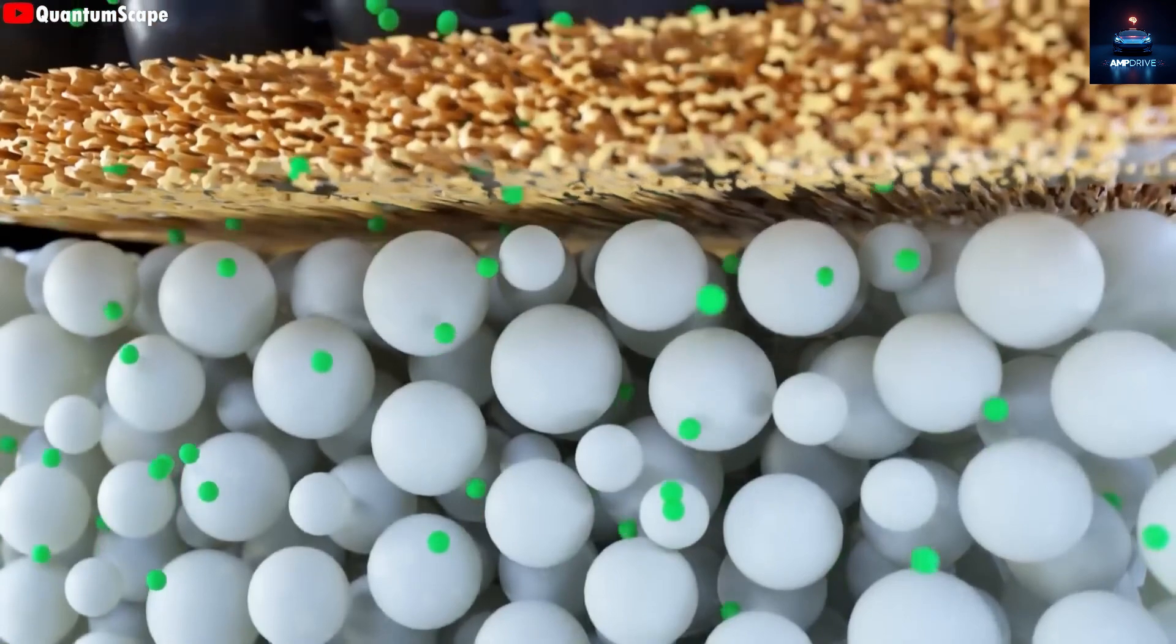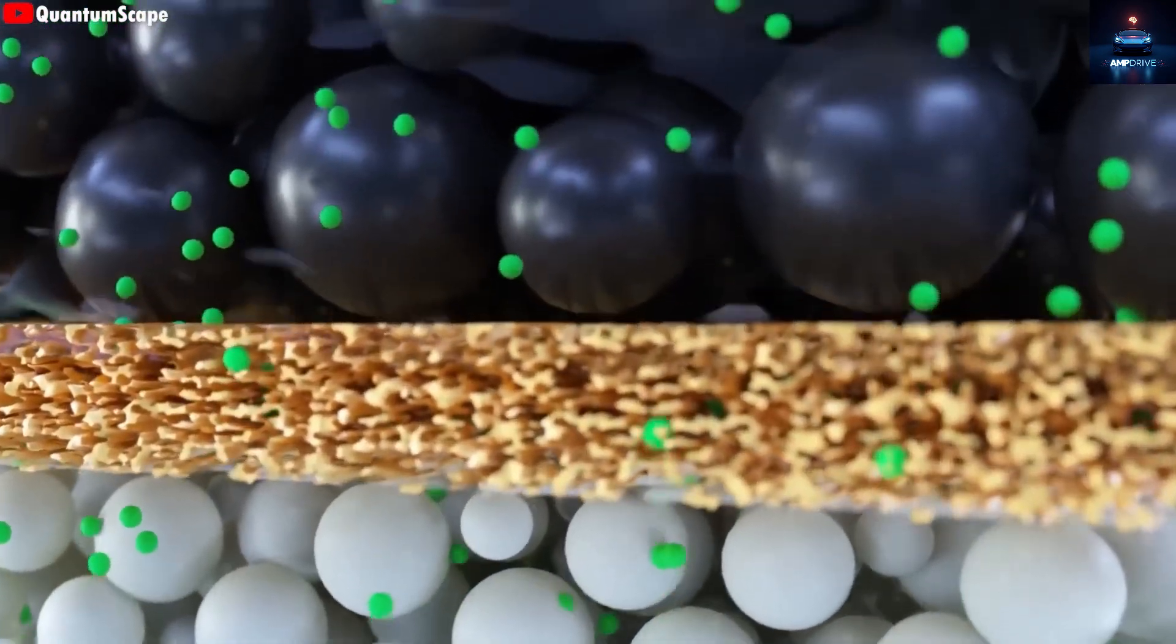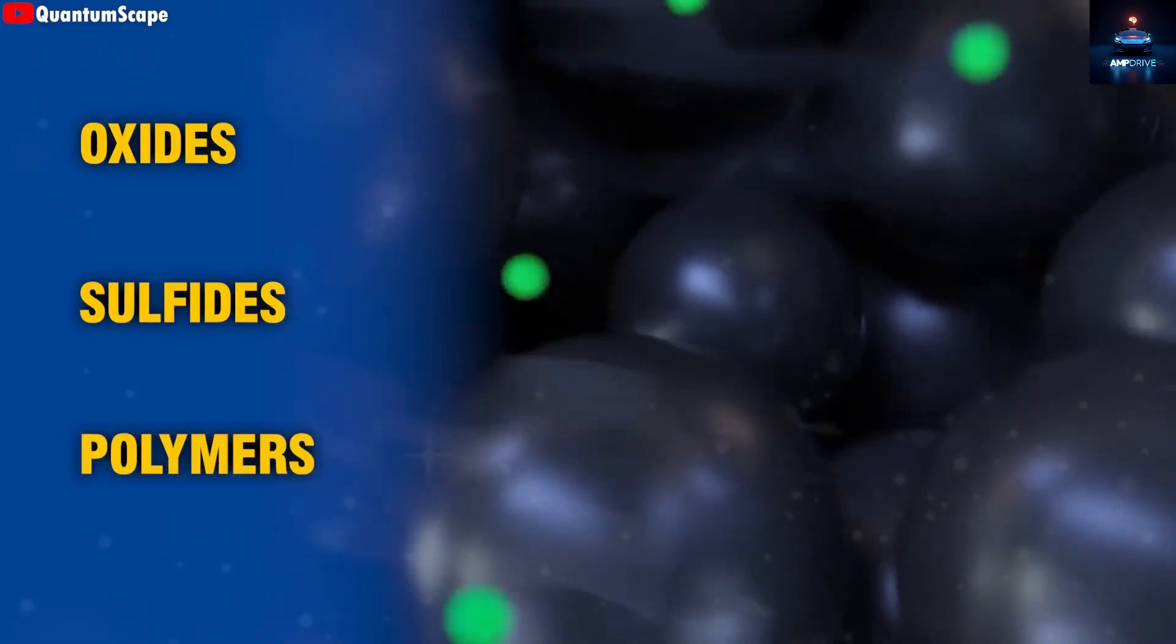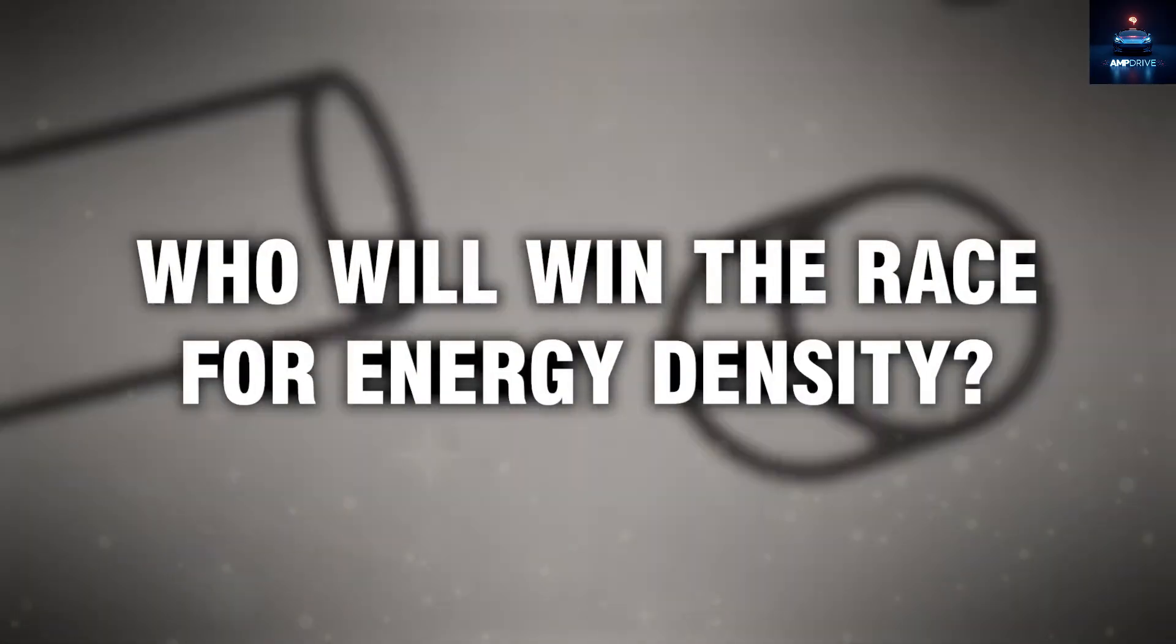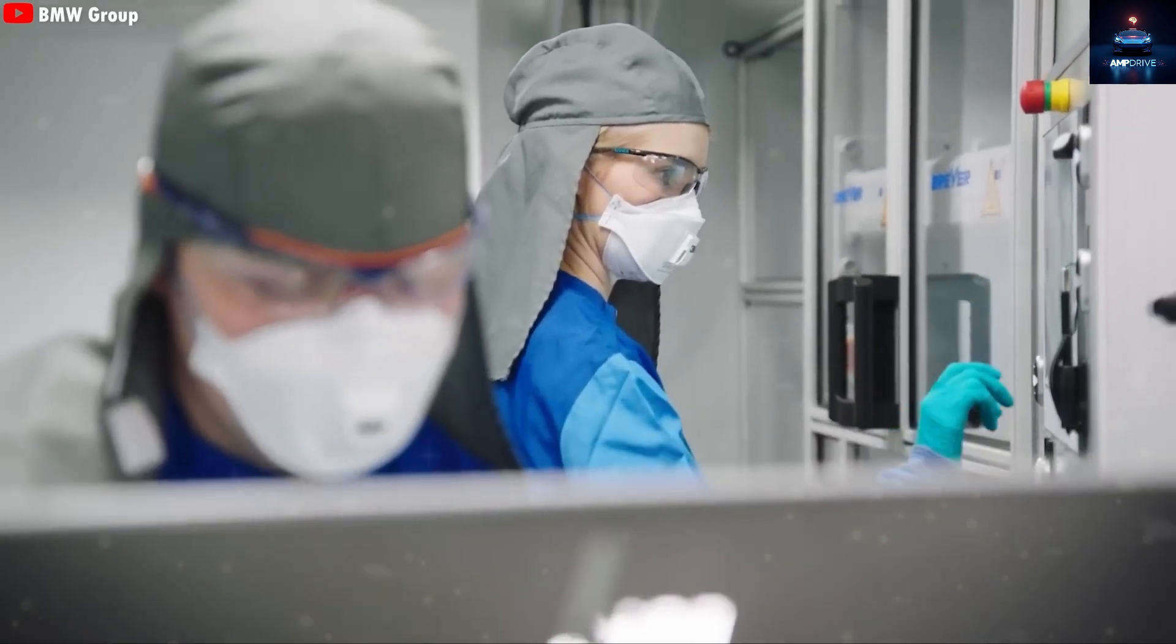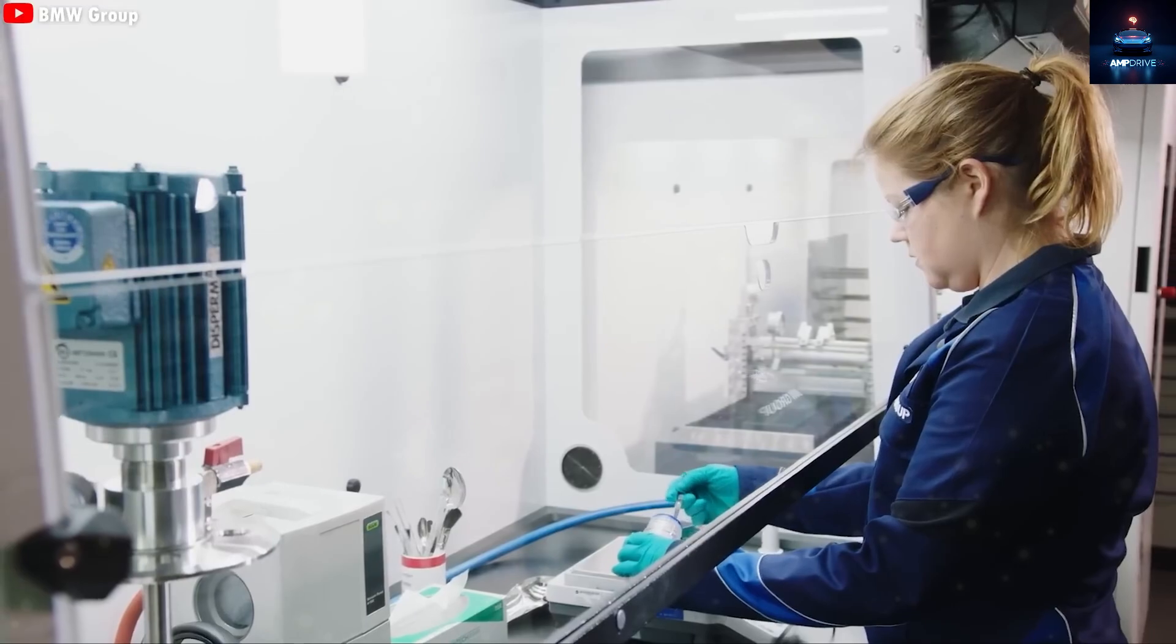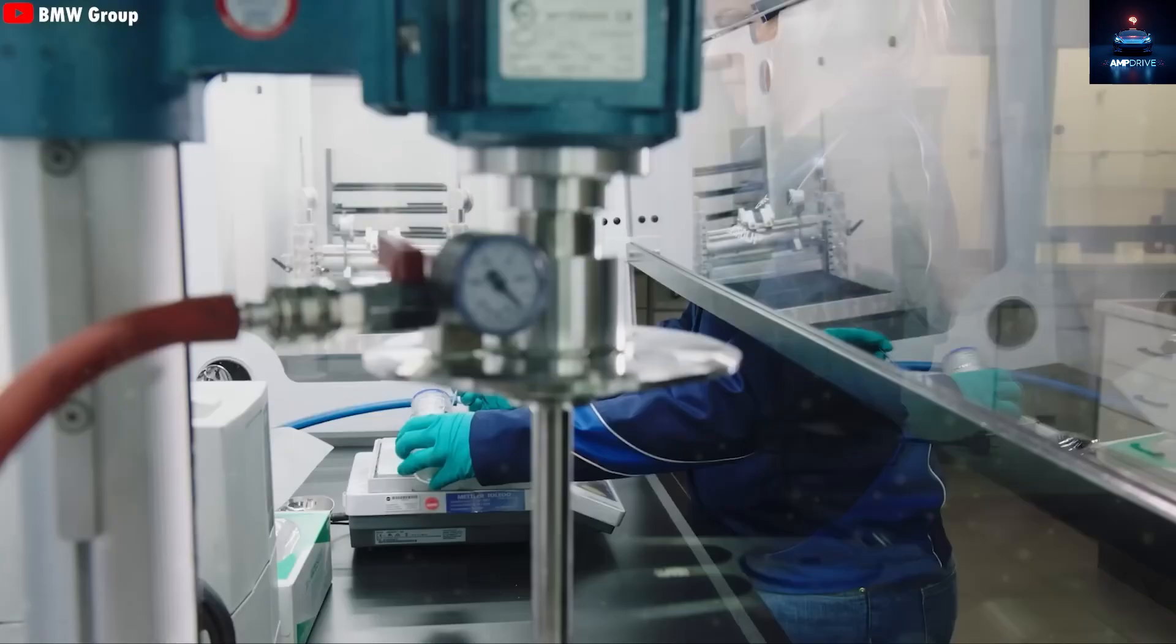Solid electrolytes in these batteries are usually made from oxides, sulfides, or polymers. The big race is now about energy density, which battery can store more power in the same space or weight? That is crucial for improving how far electric vehicles can go on a single charge.